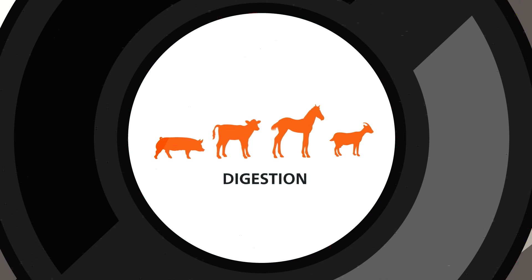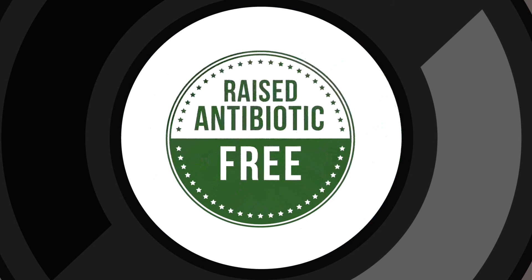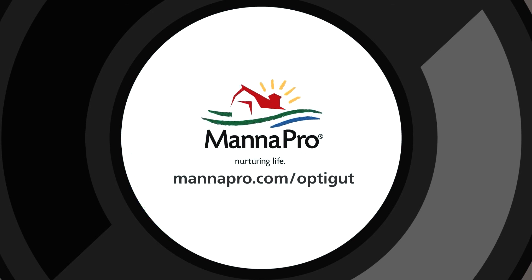Supporting gut health, digestion, growth, and development, this is Manapro's way of helping backyard farmers reduce antibiotic use, and achieve a healthy gut from the start. For more, visit Manapro.com slash OptiGut.